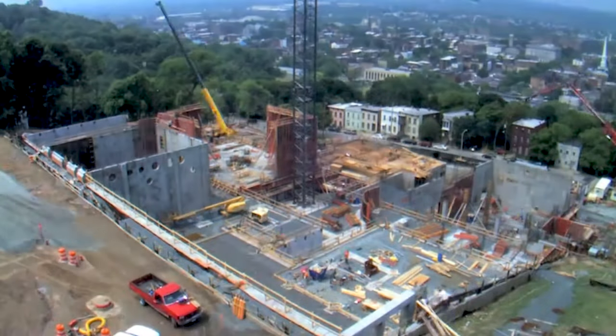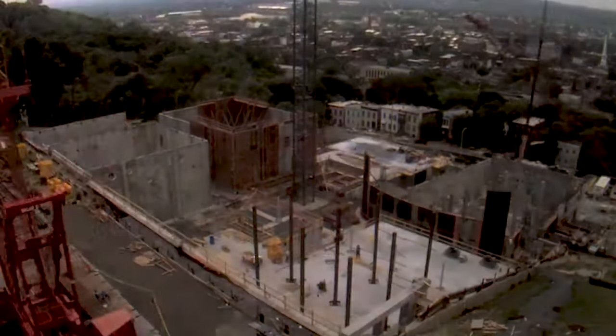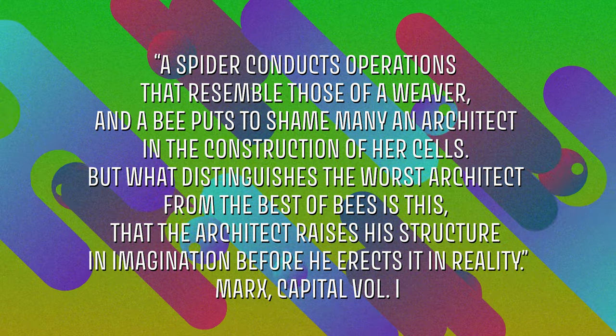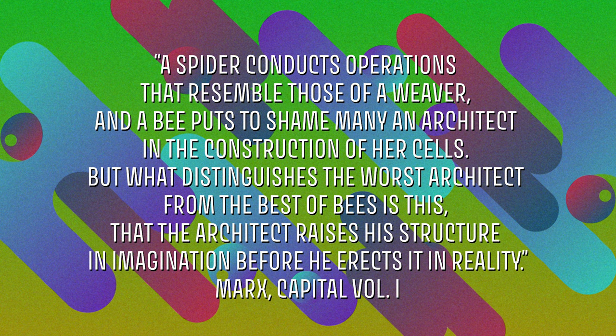In Marx's theory, labor refers to the act of production — purposeful and transformative material activity that constitutes the basis of economic development and wealth creation. In Chapter Seven of Capital, Volume One, Marx states: 'A spider conducts operations that resemble those of a weaver, and a bee puts to shame many an architect in the construction of her cells. But what distinguishes the worst architect from the best of bees is that the architect raises his structure in imagination before he erects it in reality.' It was this ability to utilize our practical, aesthetic, and cognitive powers to create new things and transform our environment that, for Marx, was the source of all new value produced under capitalism.